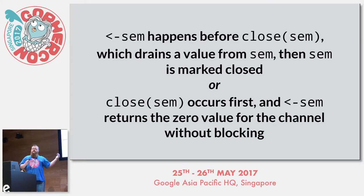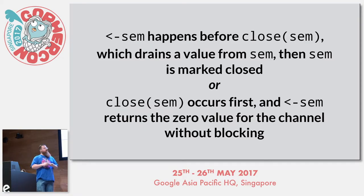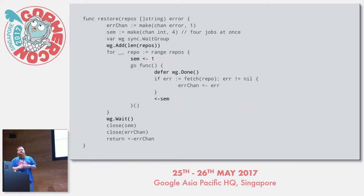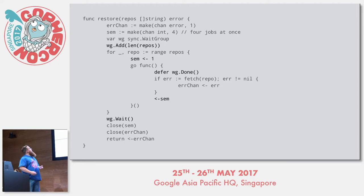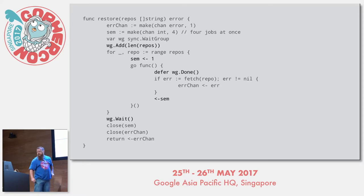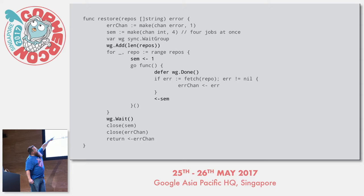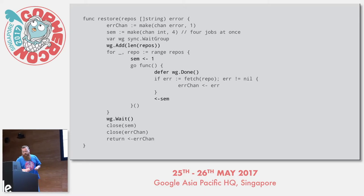The logic in this code is unnecessarily confusing. So if we simplify the defer statement and reorder the operations, we get something cleaner. Now there's no question about the order of operations. At the top we add to the waitgroup, and then each time through the loop we push a value onto the semaphore. When the goroutine is done, we take a value off the semaphore and reduce the waitgroup count. Then in the main goroutine, we're just waiting on that waitgroup count to drop to zero — no ambiguity.